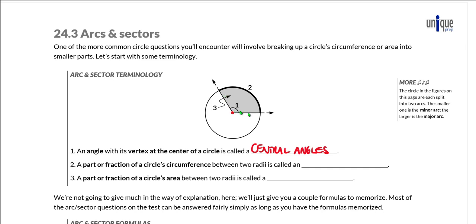A central angle makes a little slice out of the pie that is the circle. That central angle cuts off or captures a certain portion of the circle's circumference, and we call that portion an arc. The shaded region that the central angle and the two radii cut off is called a sector. So we have a central angle, an arc captured by it, and a sector area captured by it.